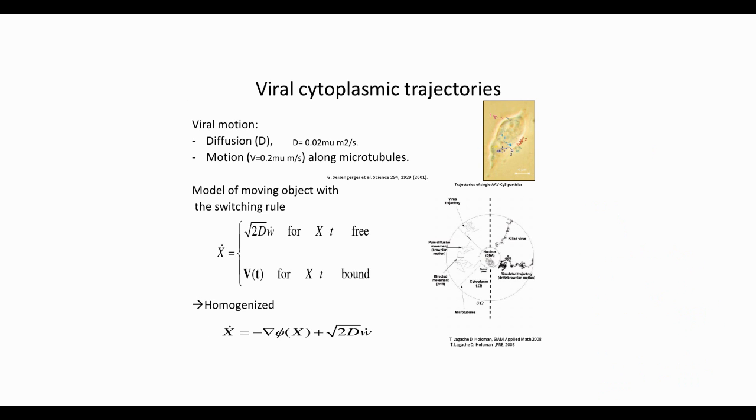Another point of the discussion is how to model these trajectories. In the case of viral trajectories, the trajectory can either move by diffusion, by Brownian motion, or by a drift. This can be modeled as a switching process, where it is diffusion as long as the particle is free, and when bound on the microtubule, it moves with a velocity V(t), which is a deterministic speed. This can occur with a transition rate lambda between the two states.